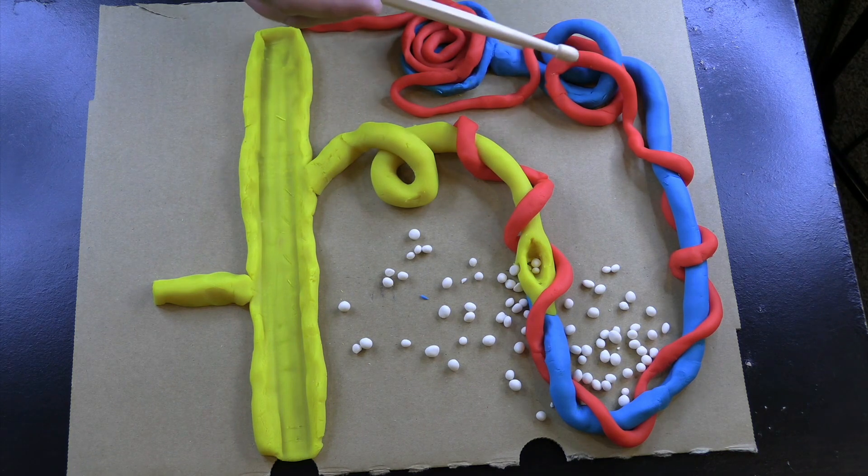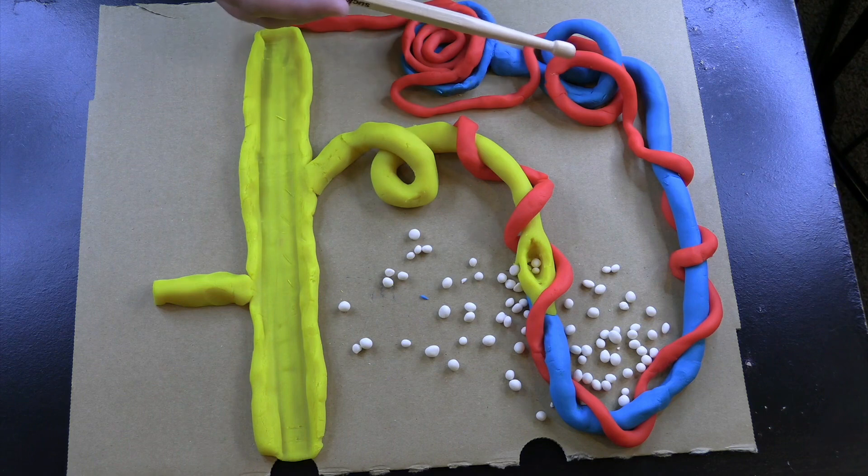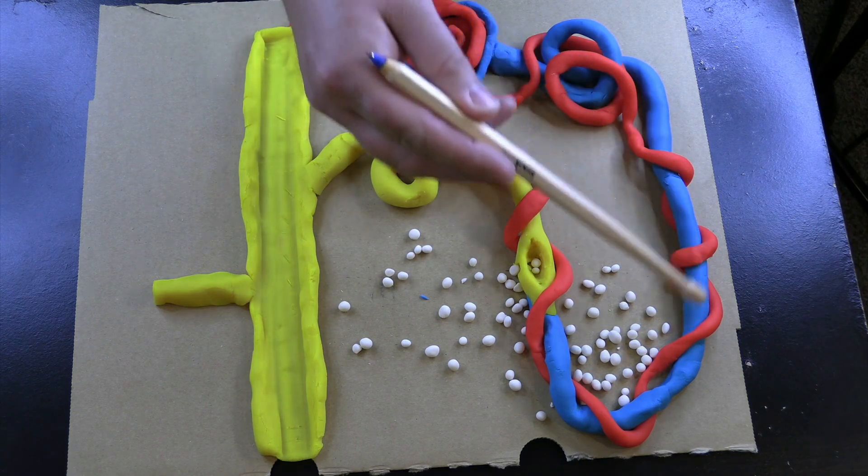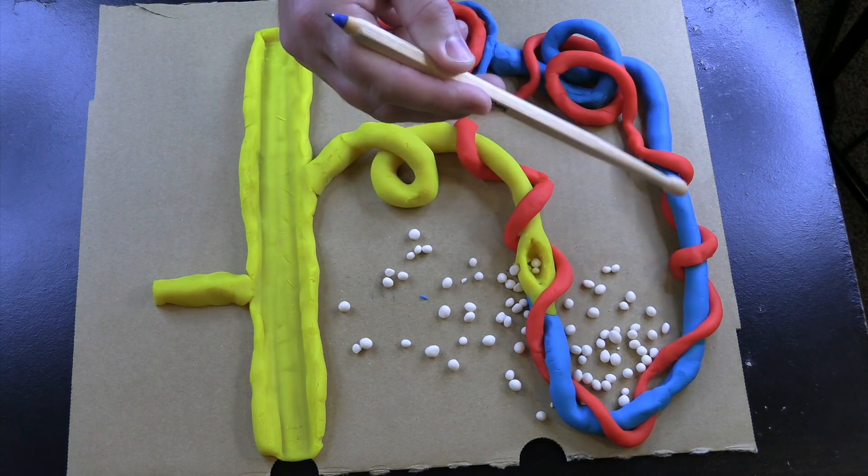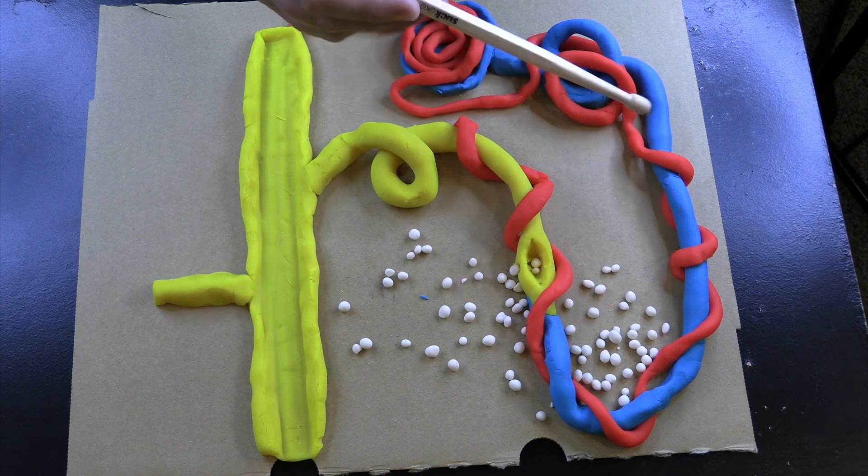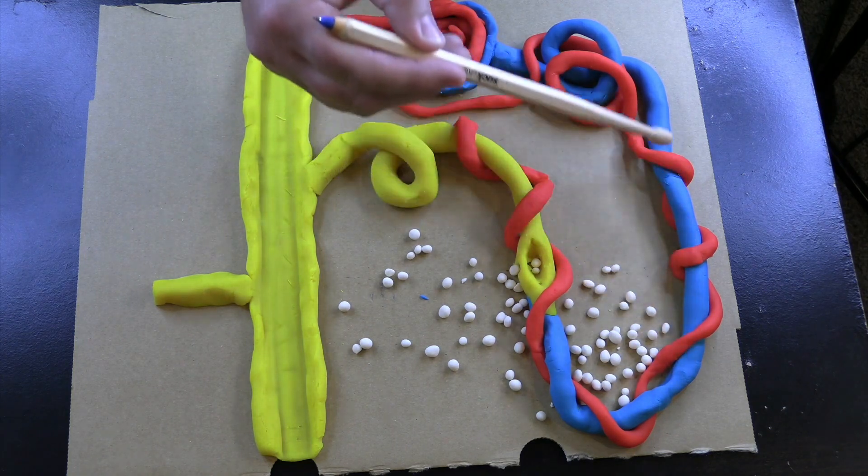In the proximal convoluted tubule, we are able to reabsorb some of that sodium, glucose, chloride, and potassium. However, we don't absorb all of it. Some of it is still going to make its way down this descending limb in the loop of Henle.